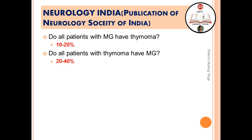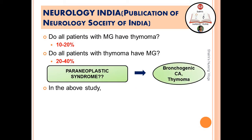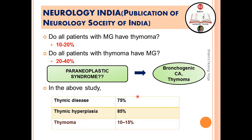To understand this, consider paraneoplastic syndrome: a tumor inside the body creates antibodies triggering an immune response where abnormal antibodies are produced, which then attack normal cells. In thymoma, the tumor produces abnormal antibodies that bind to the receptor site and cause myasthenic symptoms. Thymoma helps produce helper T cells, which help produce B cells, which produce these antibodies.